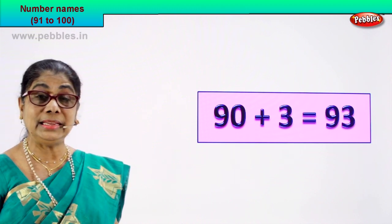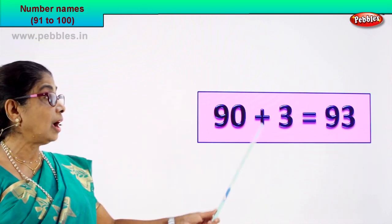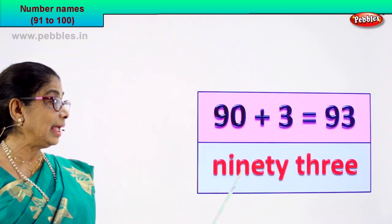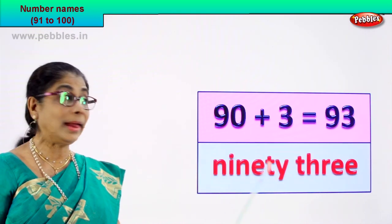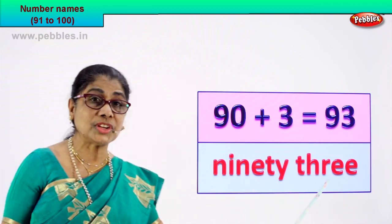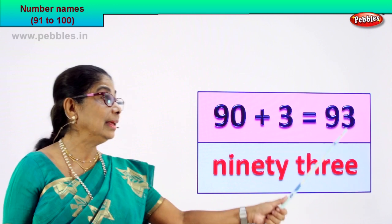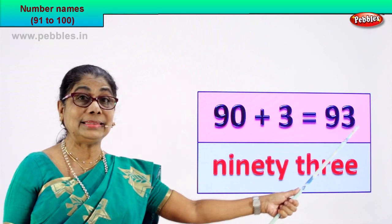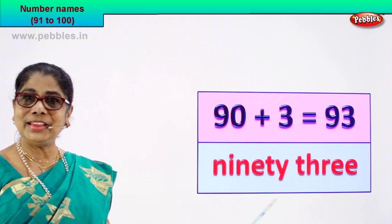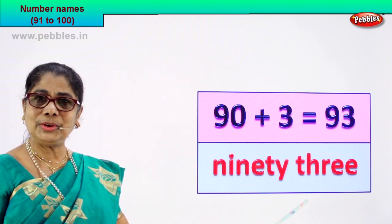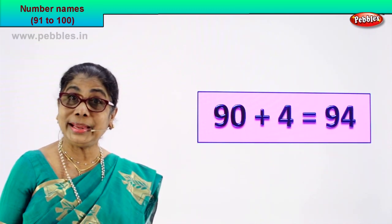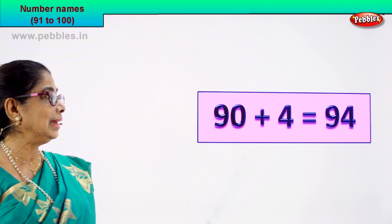It's very easy! The number name — how do we spell ninety? N-I-N-E-T-Y — ninety. And three: T-H-R-E-E — three. 9 and 3 — ninety-three is the numeral. How do we name it? Ninety-three. Very good! Shall we take our next numeral?